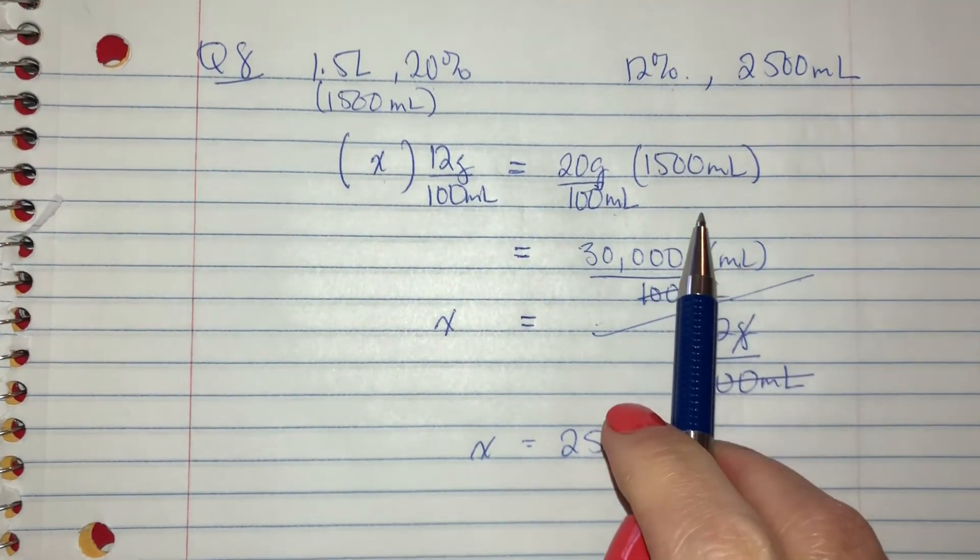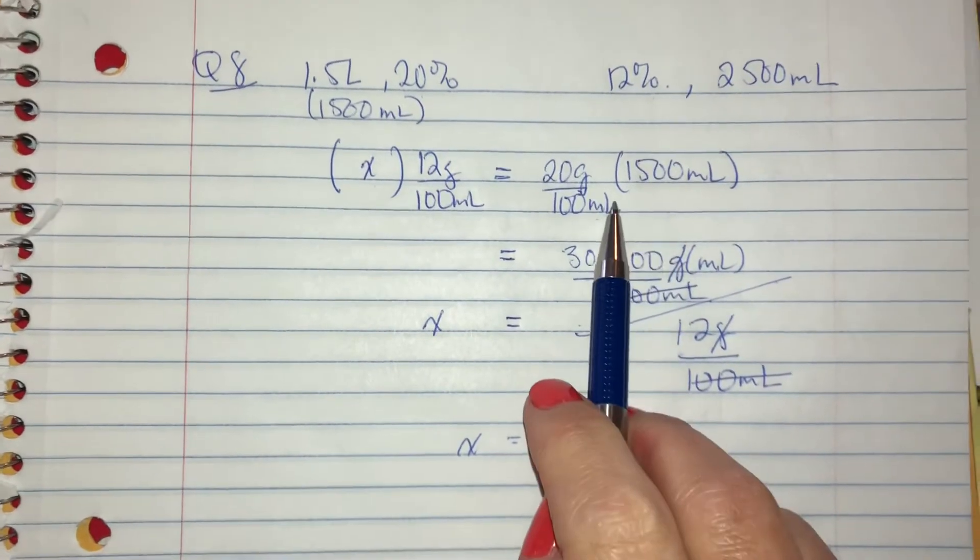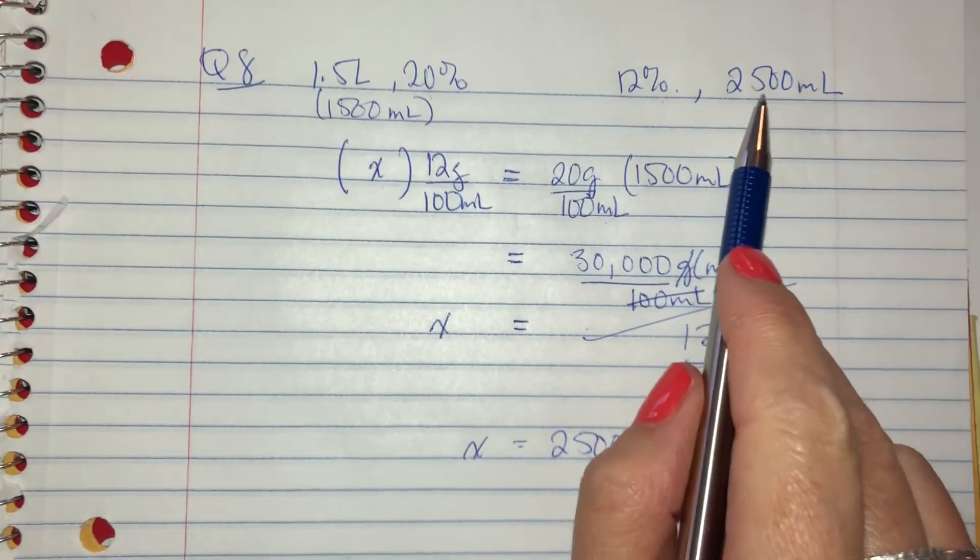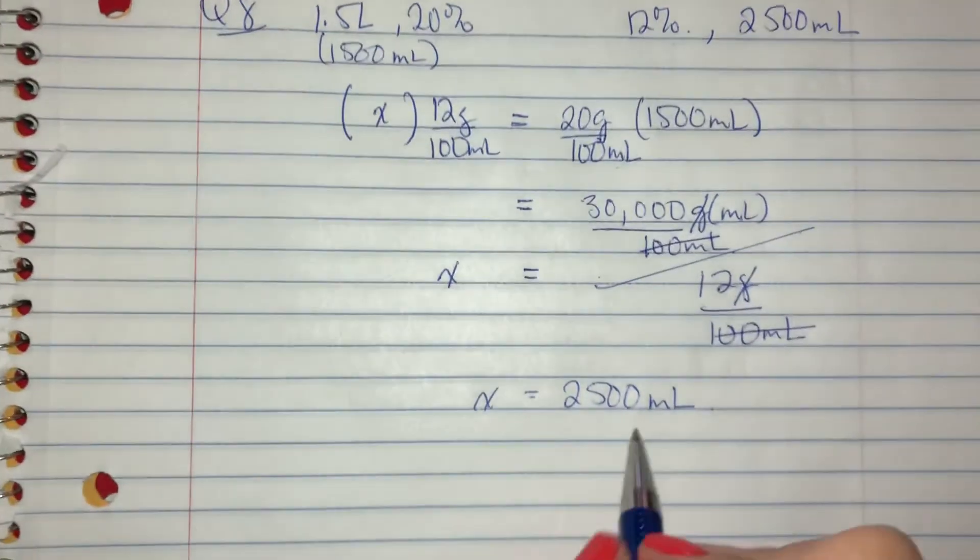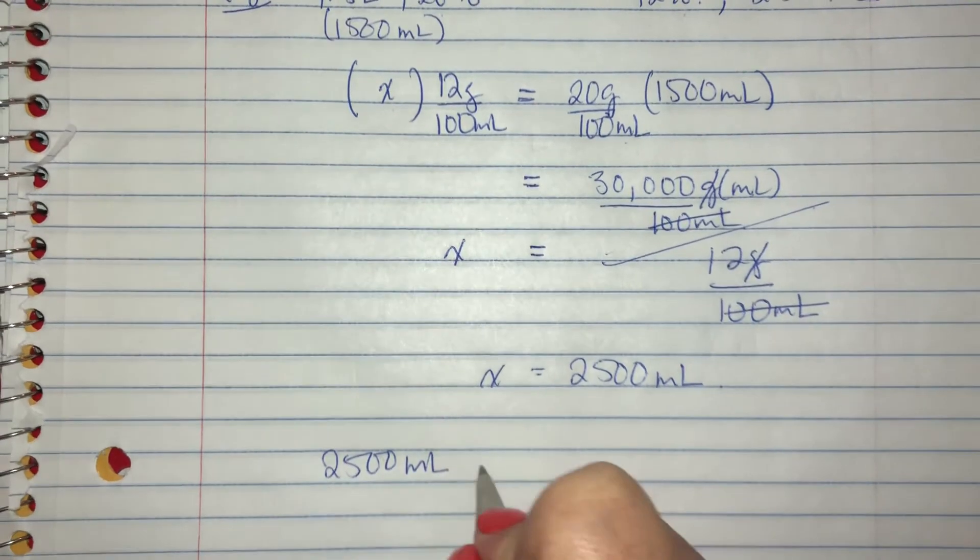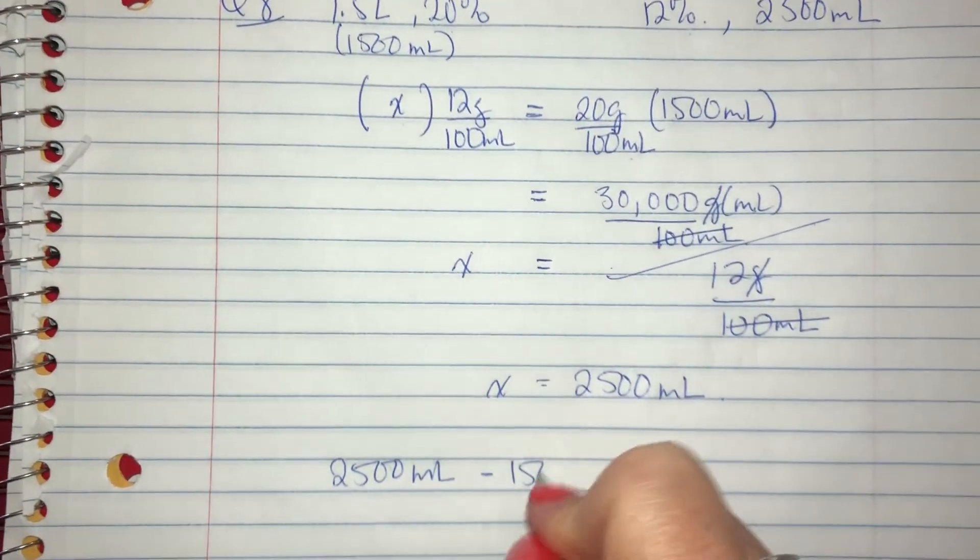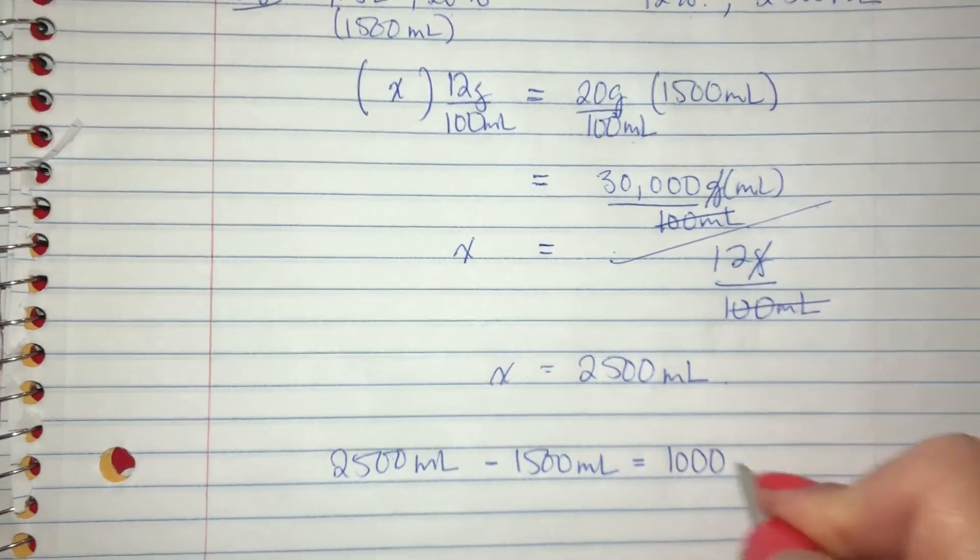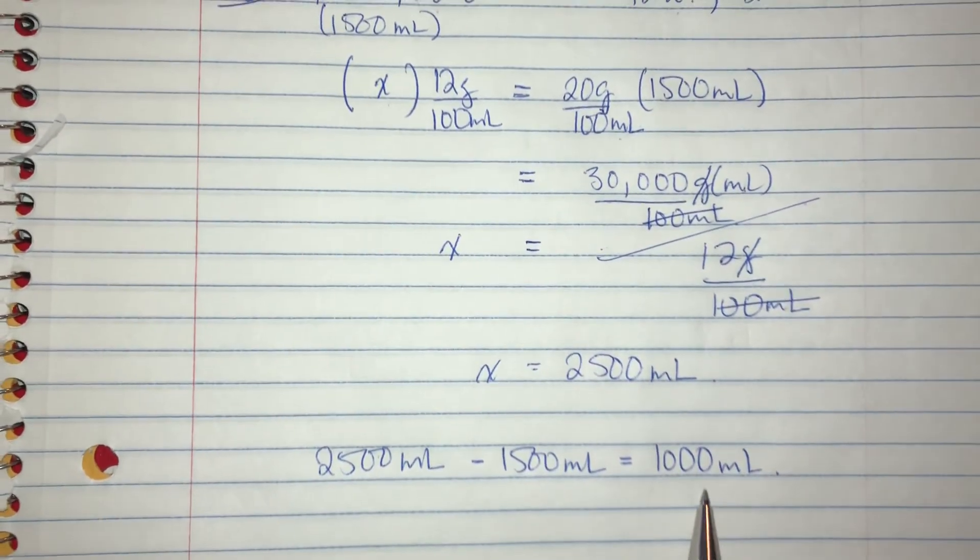But the original question said how much water do I add to make 12%. This is how much I'm going to have total volume. So I need to take my total volume and I need to subtract what I originally had to end up with the difference, which is the amount of water I needed to add to make this happen.